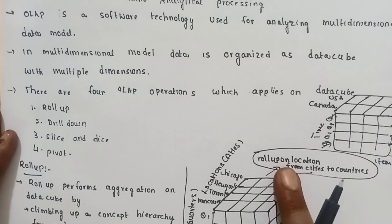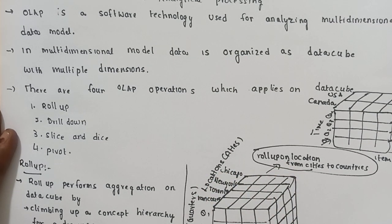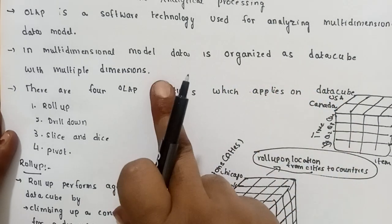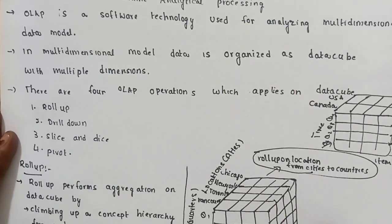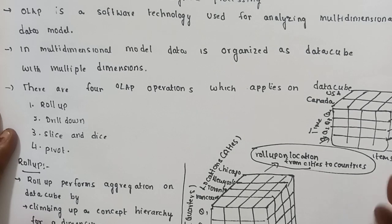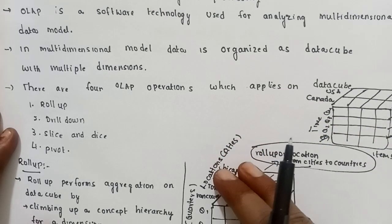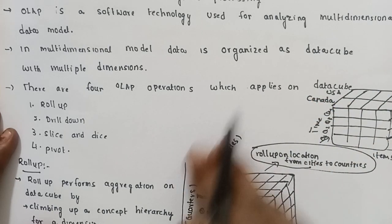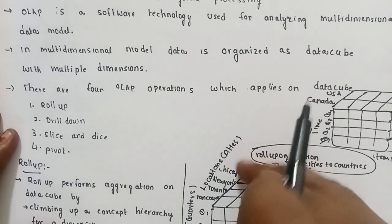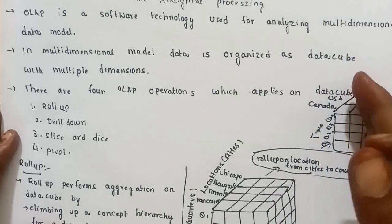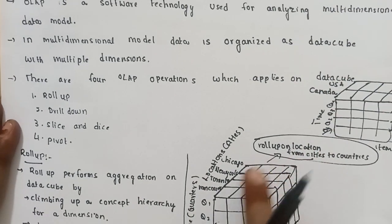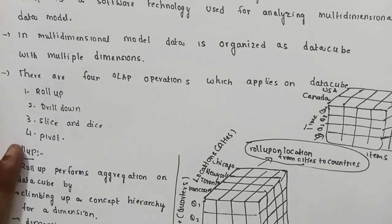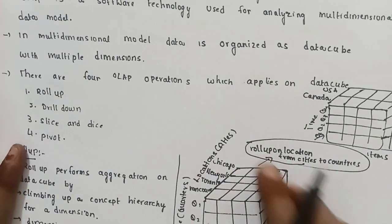Multidimensional data uses more than two dimensions. In multidimensional data, data is organized as a data cube with multiple dimensions. This multidimensional data is applied to OLAP operations.